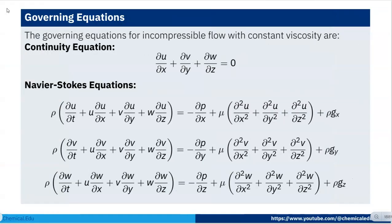Now first we have to write the governing equations. The continuity equation is: ∂u/∂x + ∂v/∂y + ∂w/∂z = 0. We are using Cartesian coordinates. Then the Navier-Stokes equations: x-momentum, y-momentum, and z-momentum equations.